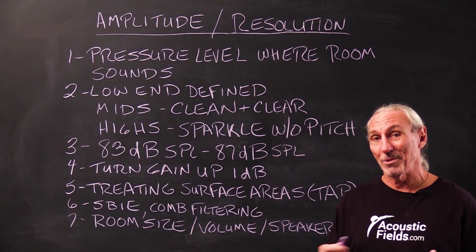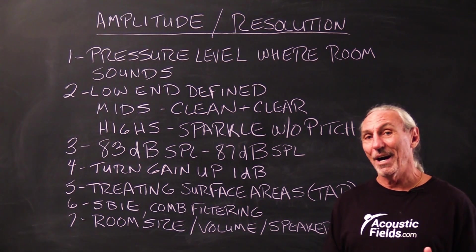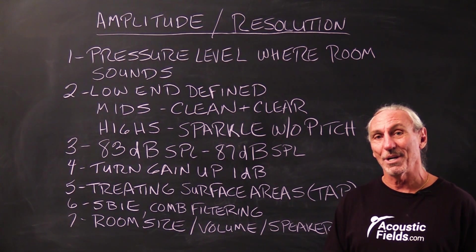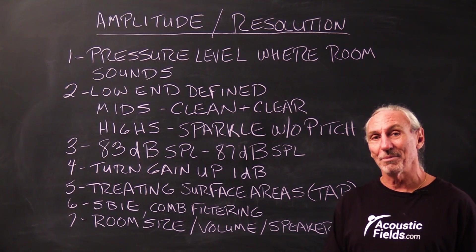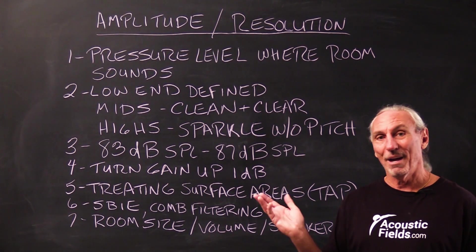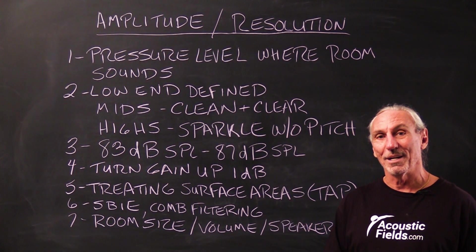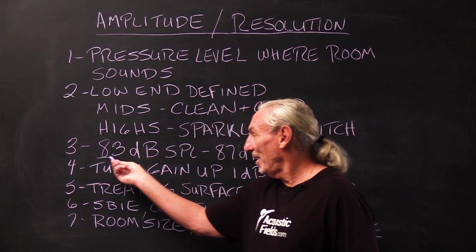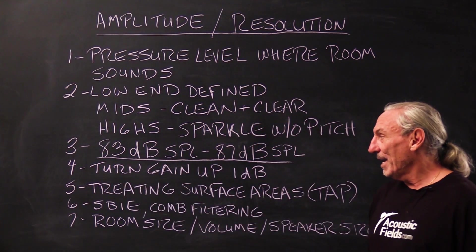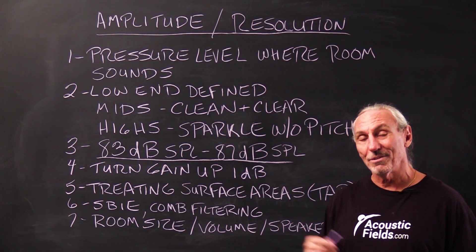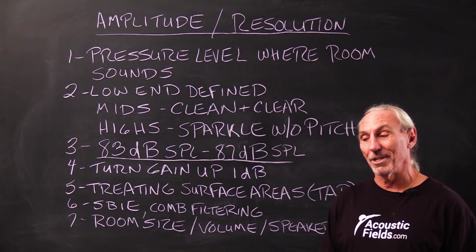You're happy with the sound. And if you record that sound pressure level over time, you'll start to see some consistencies. We do it naturally in our studio when we're listening, and we have three, four, five years of data. What we discovered is that in our studio, the 83 to 87 dB SPL range is where the room really sounds good.